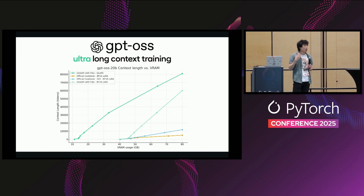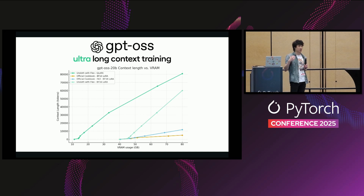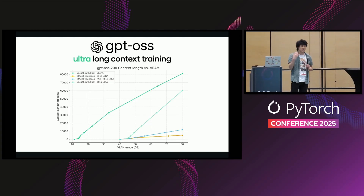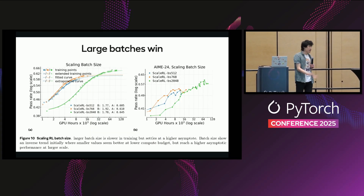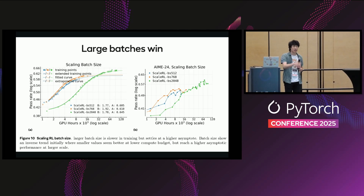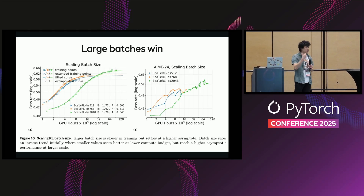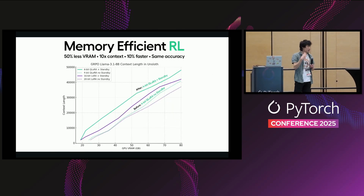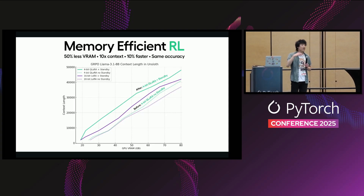For ultra-long context training you need to make the process much more efficient — for example, Gemini's one million context length. The goal is to make context windows of all models nearly infinite. DeepSeek released sparse attention for this. Large batches also win: at the very beginning of training small batches seem to win, but over time the large batch scenario takes over. You need to reduce memory usage and make RL efficient so you can run all these experiments in parallel.